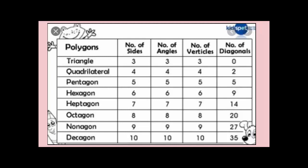Pentagons have five sides, hexagons have six sides, heptagons have seven, octagons are eight-sided, nonagons are nine-sided, and decagons have ten sides.